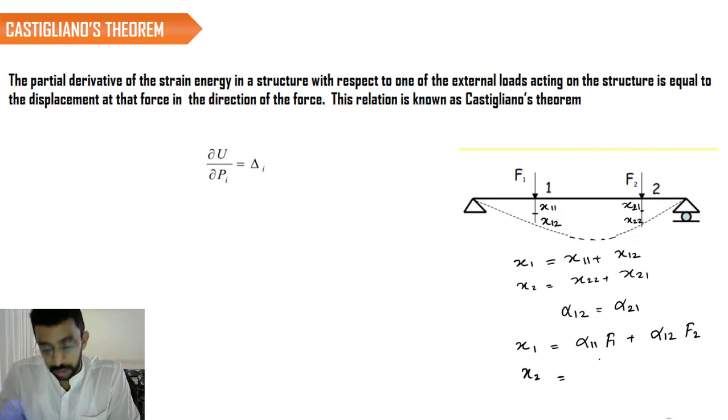Similarly, I can rewrite the equation as X2 equals alpha 22 F2 plus alpha 21 F1.